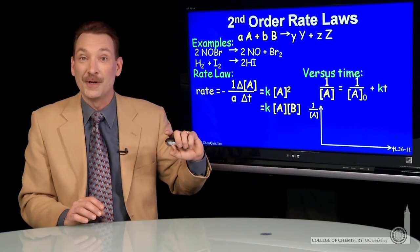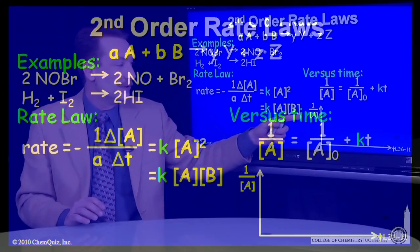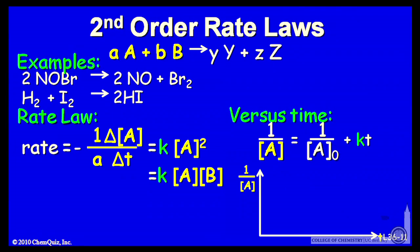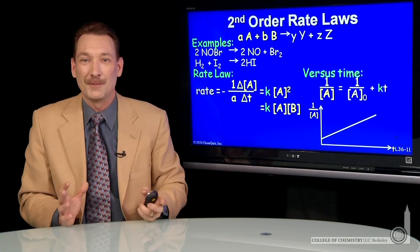And that's how you determine if you have a second order chemical reaction. You measure concentrations versus time, then take 1 over the concentration and plot it versus time. If that's linear, then you have a second order chemical reaction.